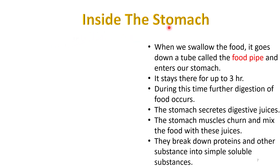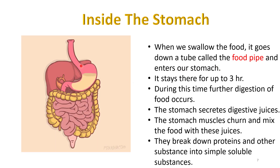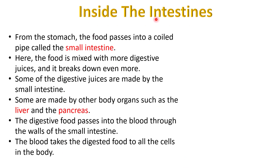Now let's see what happens with the food inside the stomach. When we swallow the food it goes down a tube called the food pipe and then enters our stomach, as we can see in this image. The food moves through the food pipe and reaches the stomach. It stays there for up to 3 hours. During this time further digestion of food occurs. The stomach secretes digestive juice and the stomach muscles churn and mix the food with these digestive juices. They break down protein and other substances into simple soluble substances.